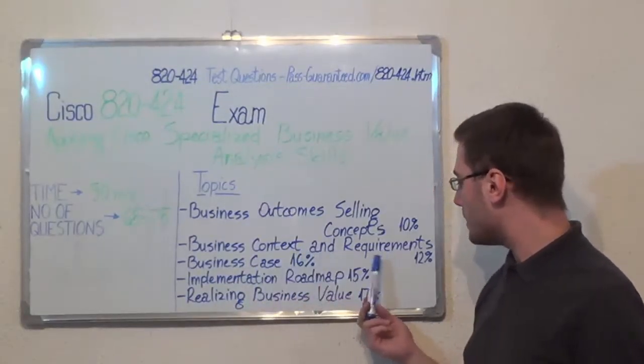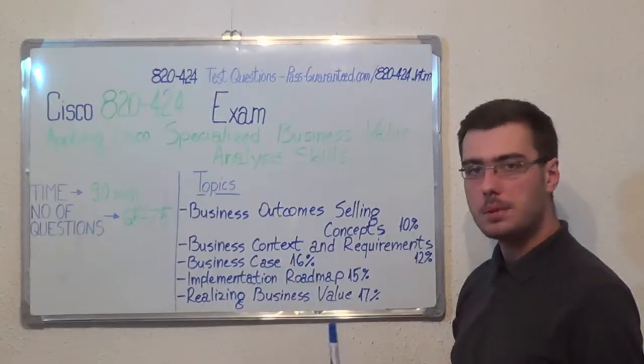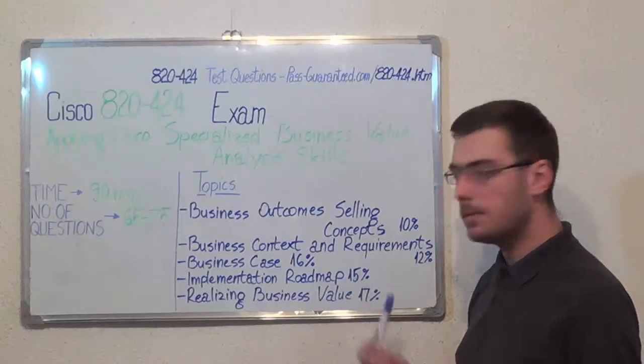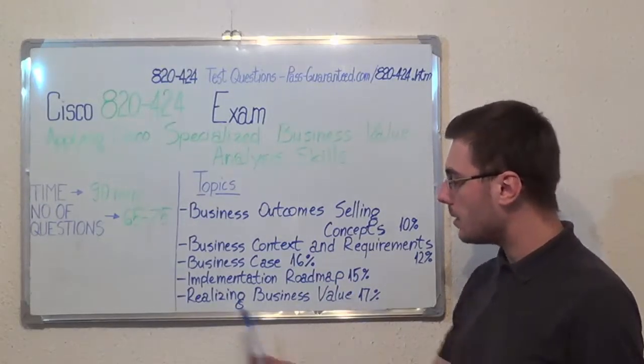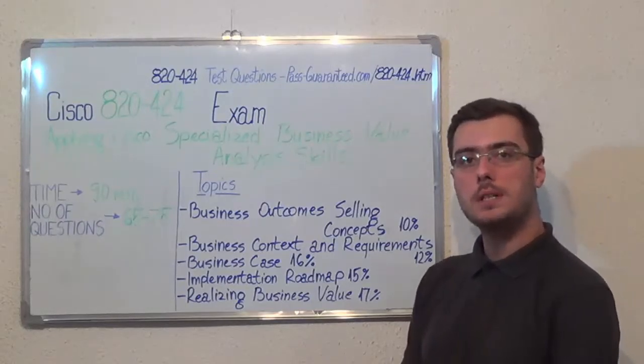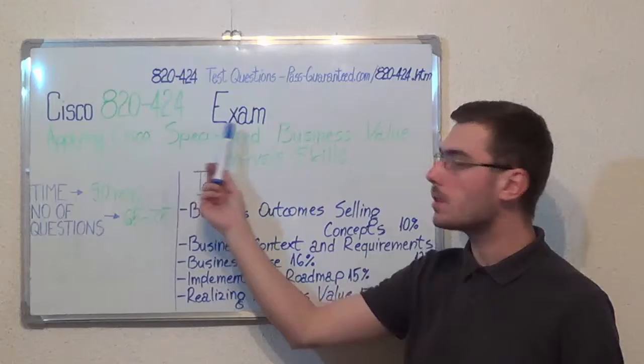Second, Business Context and Requirements with 12%, then Business Case with 16%, after that we have Implementation Roadmap with 15%, and the last one, Realizing Business Value with 17%.